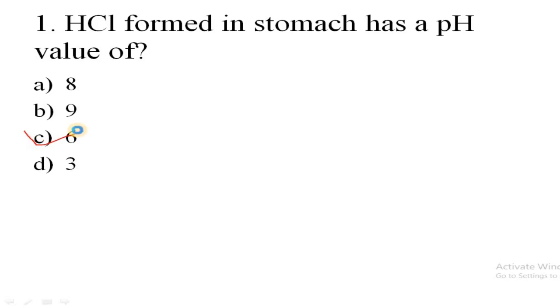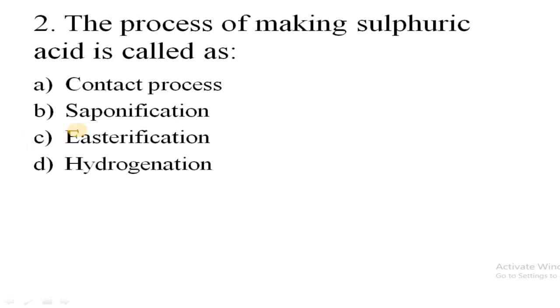The process of making sulfuric acid is called? Option A, contact process - it is the correct answer. Saponification is used for making soap, esterification is used for making fruit-like flavoring compounds, and hydrogenation is used for making ghee from oils.